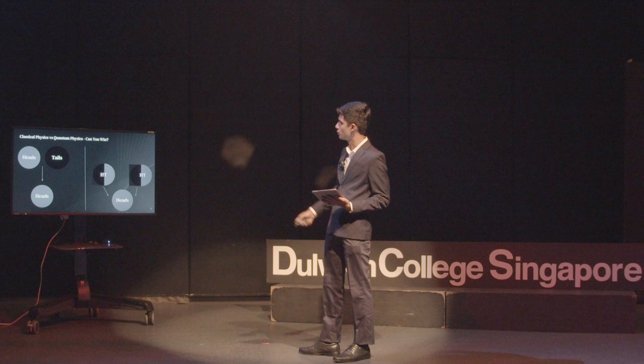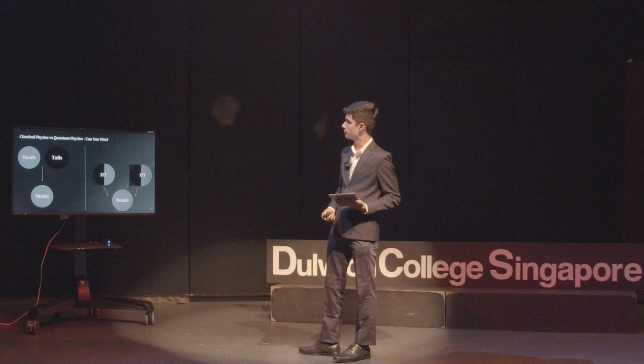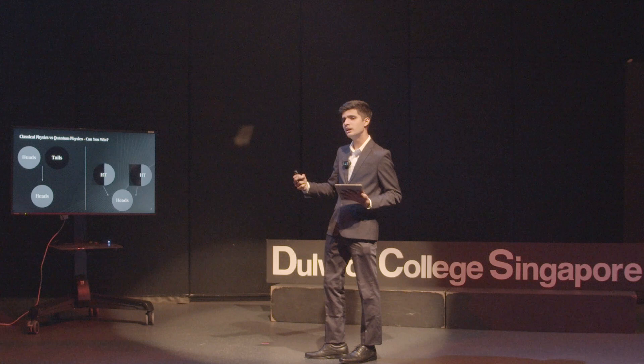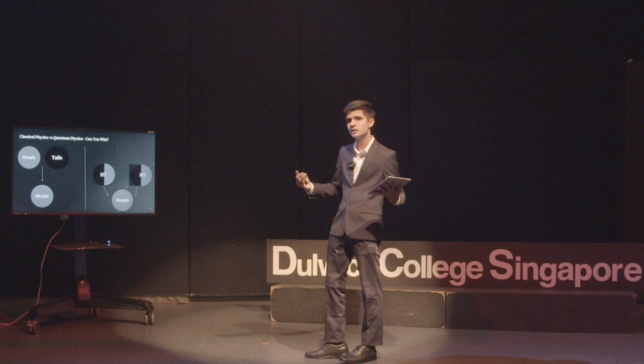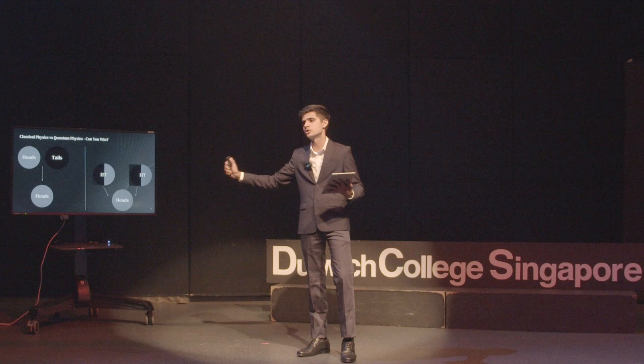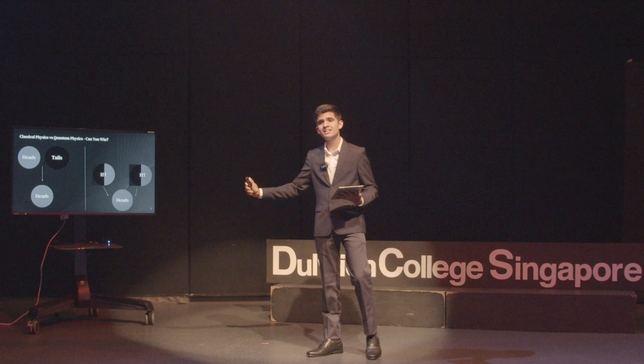Let's look at how a classical computer governed by classical physics works. Take a coin-flipping game: you have a fair coin — heads and tails — you flip it, and the computer flips its electronic coin. At the end, we measure both results, and if they match you win; if they don't match, the computer wins. In classical computing, governed by classical physics, there's a 50-50 chance, assuming a fair coin.